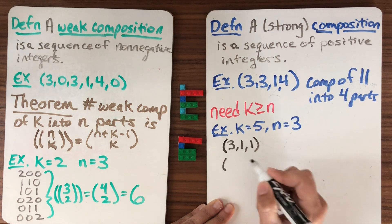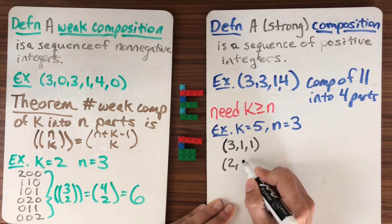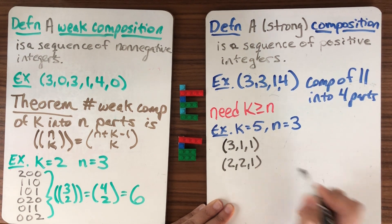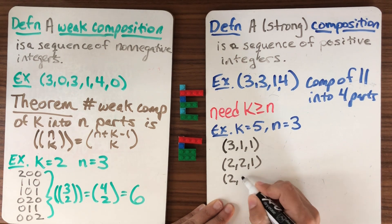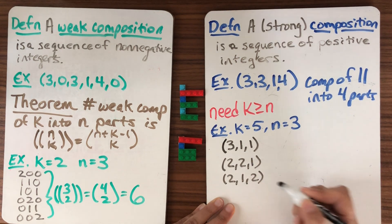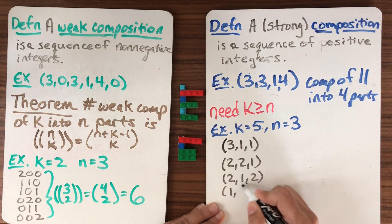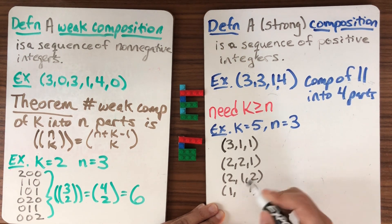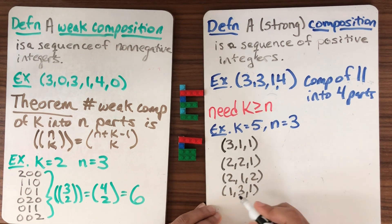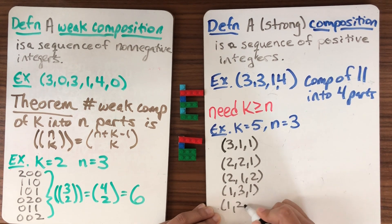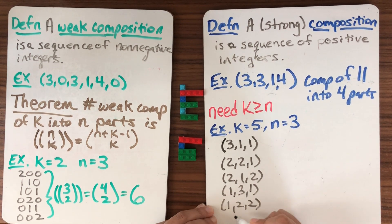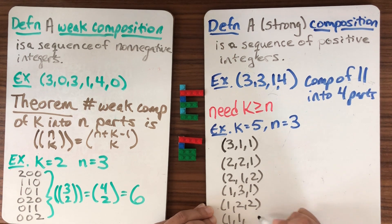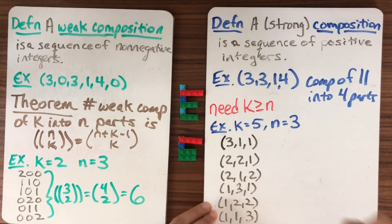So I could write it like this. I could do that, or I could do two and then I could do a two and a one, right? Or I could do a two and then a one and a two. That's another possibility. I could do one, three, one. I could do one, two, two. And I'm generating these systematically in lexicographic order the way that I would tell a computer to generate them.